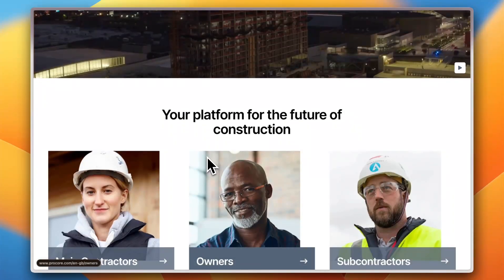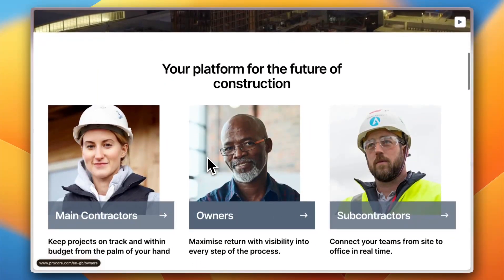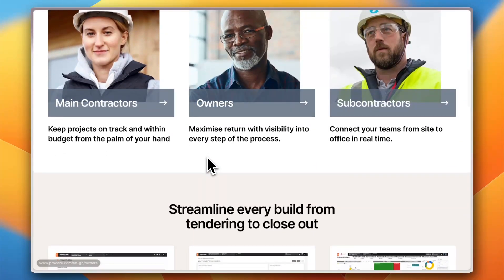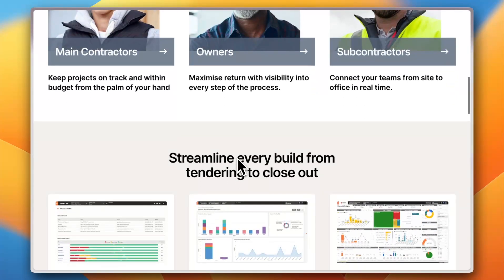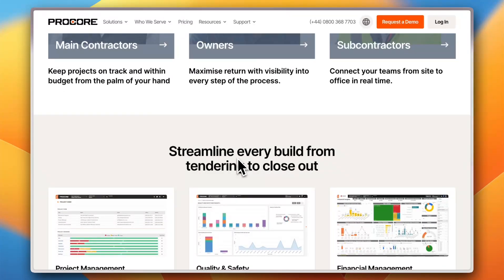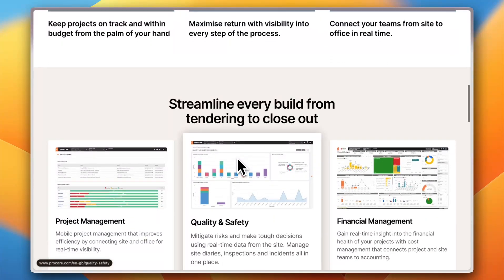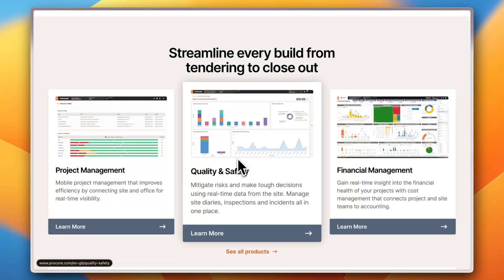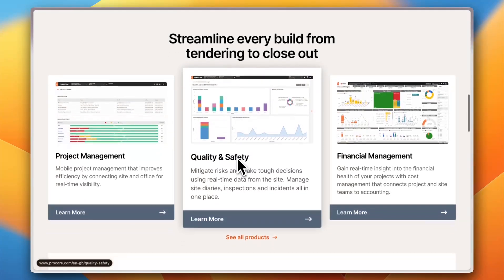Procore helps you manage everything from project timelines and budgets to teams and safety reports, all in one place. It's designed to simplify the complex process of construction management, making it easier to collaborate, track progress, and ensure successful project delivery. Whether you are a general contractor, subcontractor, or a project manager, Procore can help you stay organized, reduce errors, and boost efficiency by centralizing your workflows.